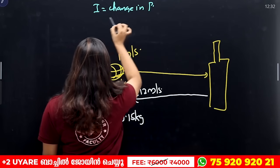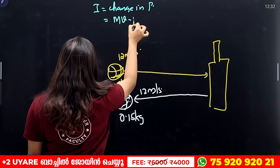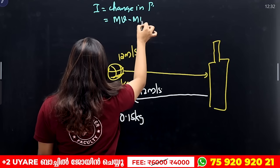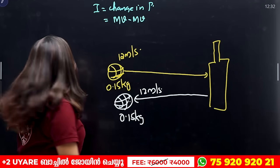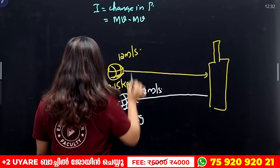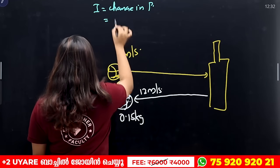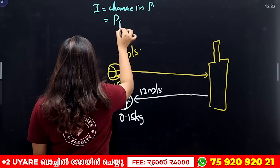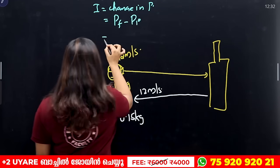How do you find change in momentum? It is mv minus mu — final momentum minus initial momentum. That is p-final minus p-initial.